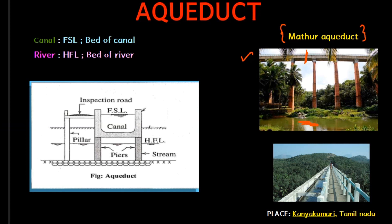The second image is the top view. In the canal, there is an inspection road. From a Civil Engineering point of view, the canal is the topmost water surface, while the river is also described by its topmost water surface. The canal bed is the bottommost surface, and the river bed is the bottommost surface of the river.